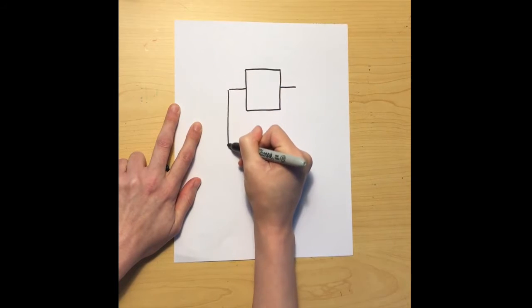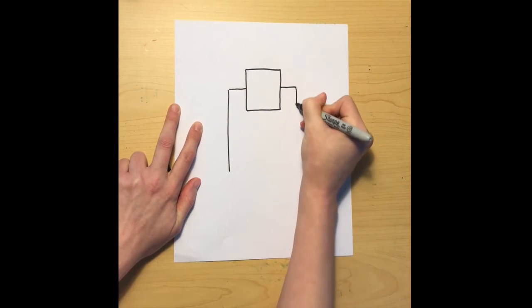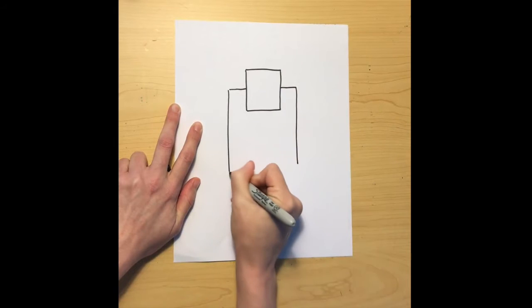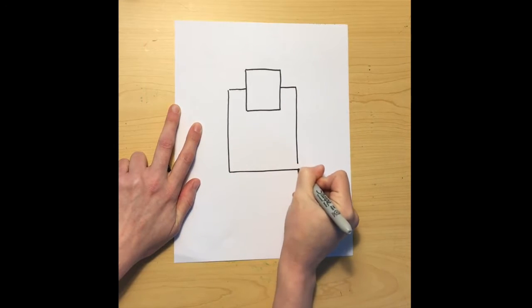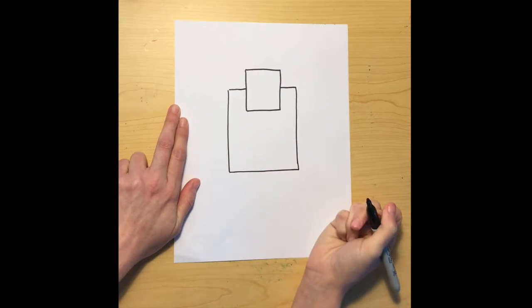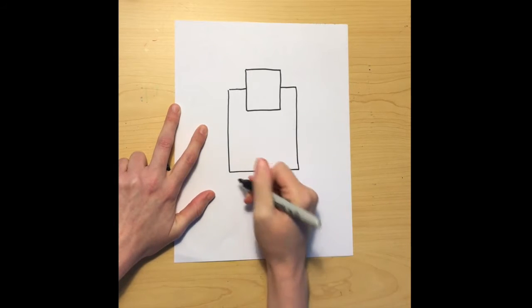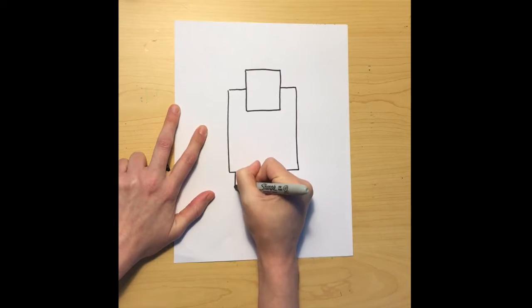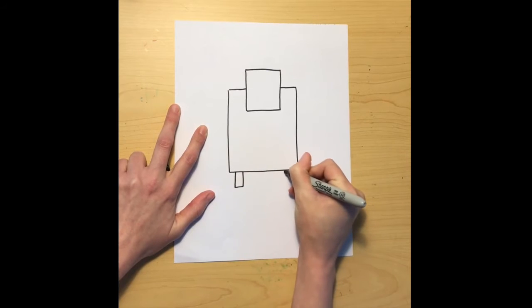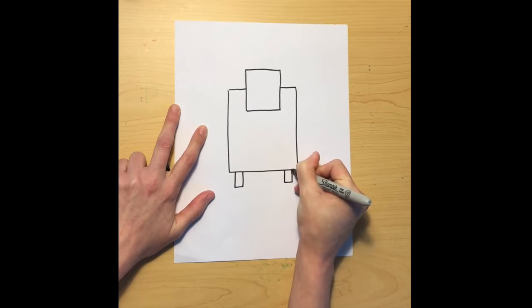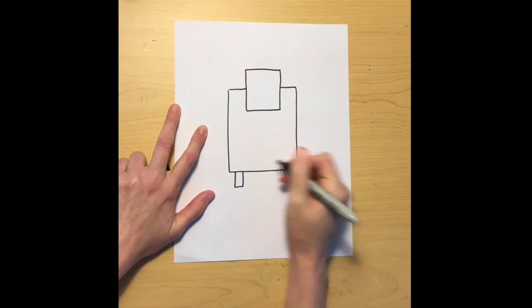We're going to add two lines and then drop two longer lines down. This will be kind of a rectangle body. Do you see how the big rectangle goes behind the face?